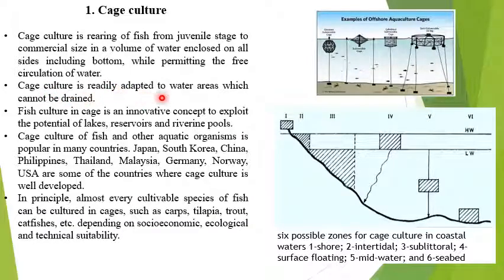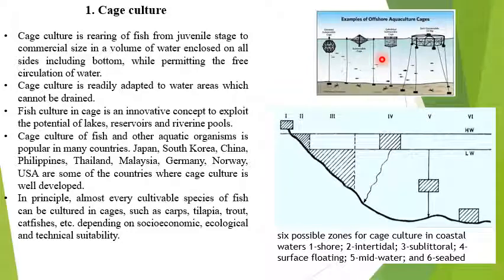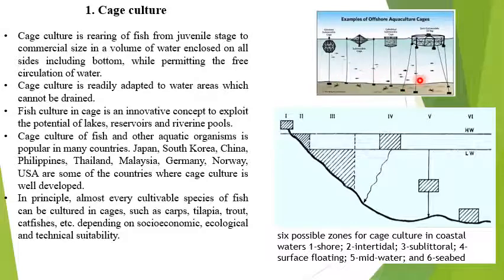Cage culture is ideally adapted to water areas where the water cannot be drained — where permanent water is present. If the water is drained, your cage will go down and your culture will be completely eliminated or destroyed.